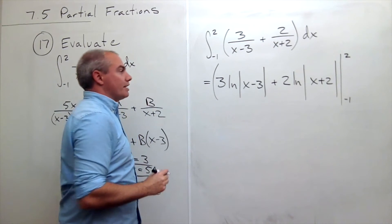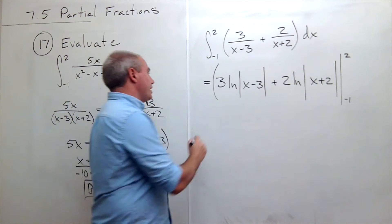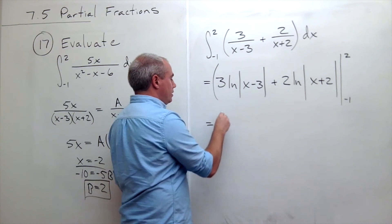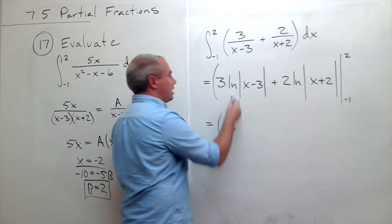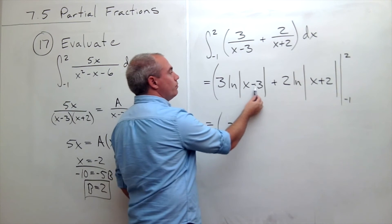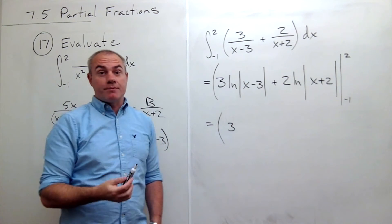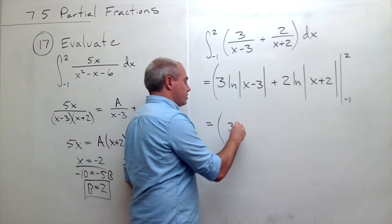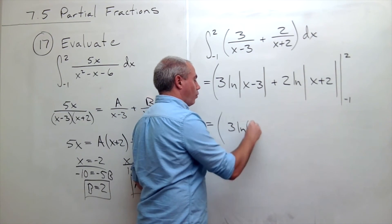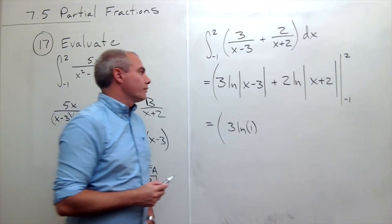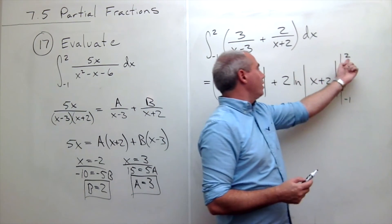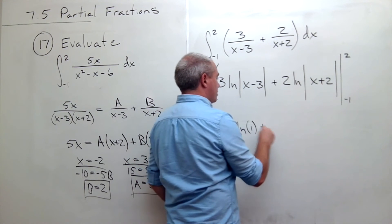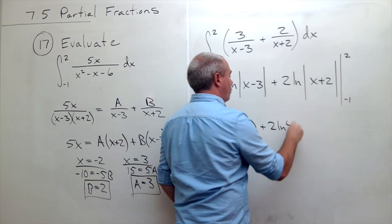All right, so let's plug in my 2 and my negative 1. First, let's plug in 2. I get 3 times ln of 2 minus 3. 2 minus 3 is minus 1. The absolute value of minus 1 is 1. So this is just ln of 1. Okay, plug in 2 here and I get 2 ln of 4. So plus 2 ln of 4.